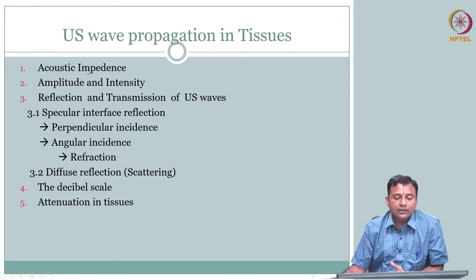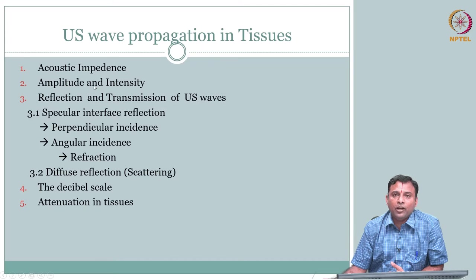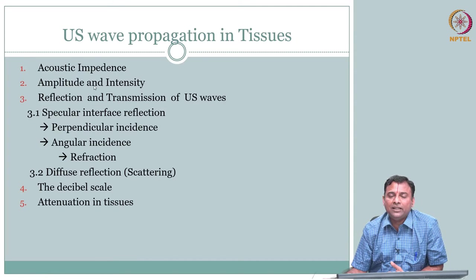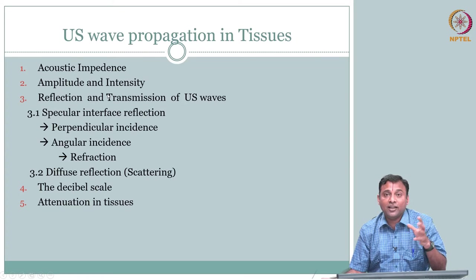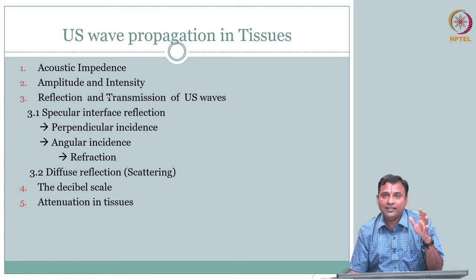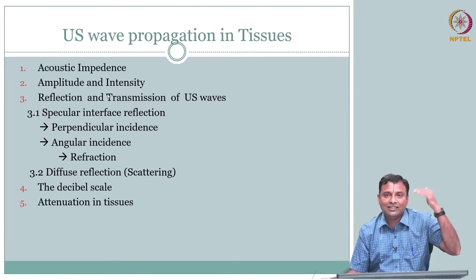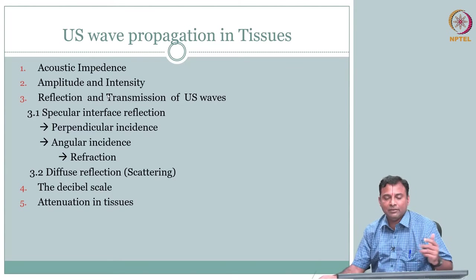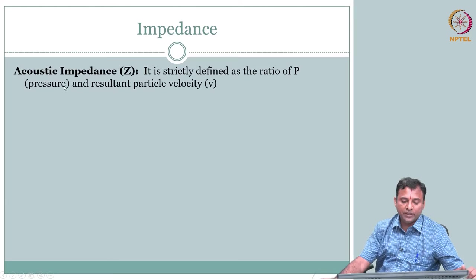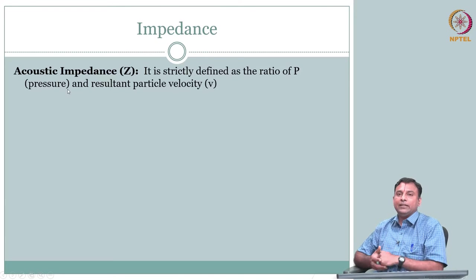We will start with impedance, and then amplitude and intensity — very similar to how we covered x-ray. First we defined photon flux, fluence, and intensity, and then used those in our interaction models. We will do the same thing here. First is acoustic impedance.